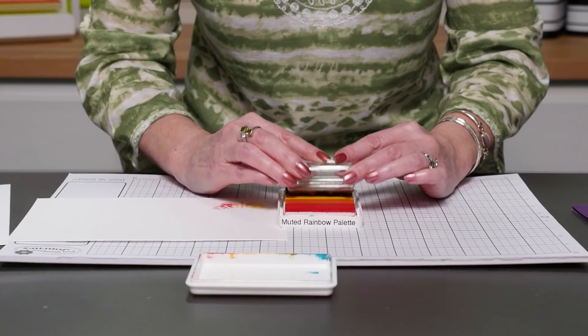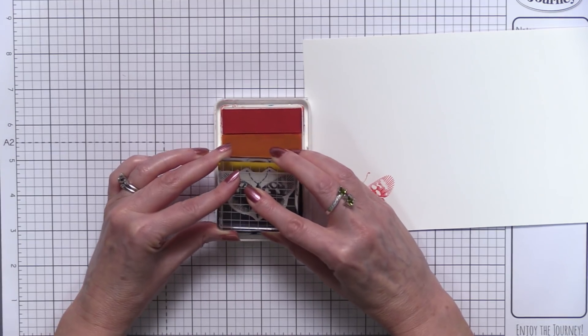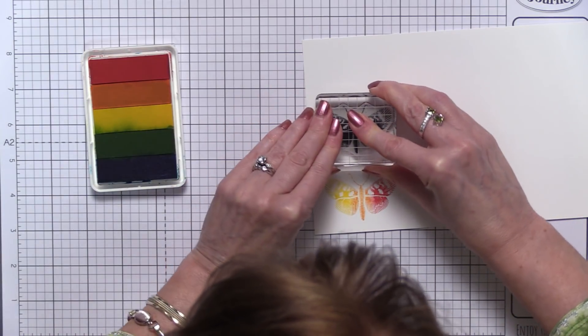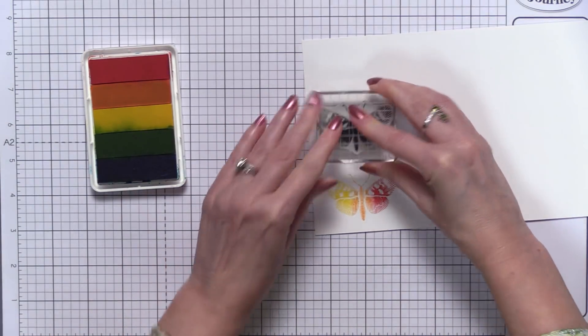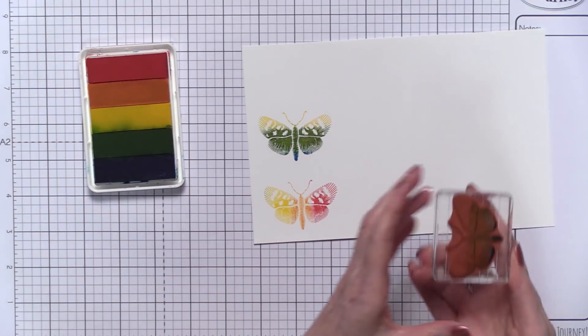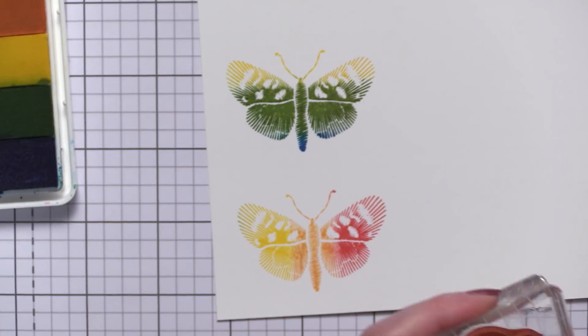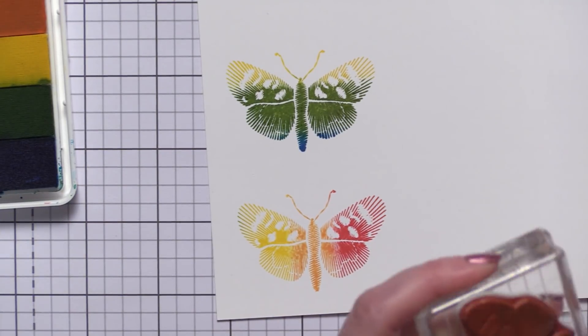And here's what that one looks like, very pretty. Okay, now what if you want the wings symmetrical, so you want the same colors on the wings?